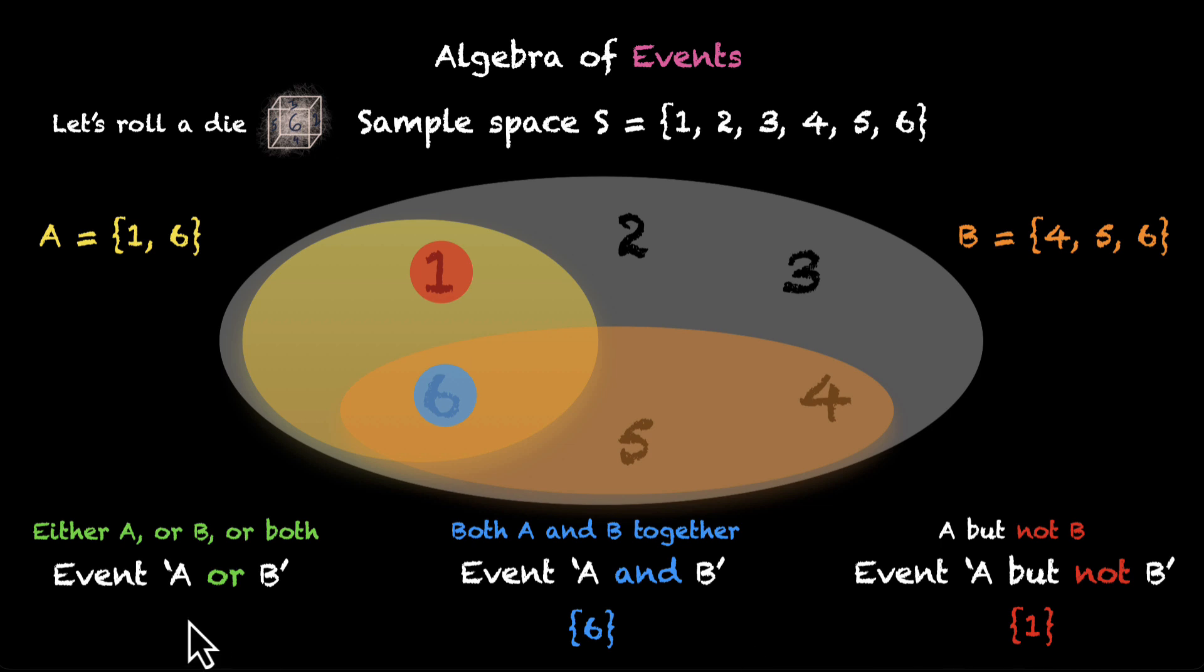And what about the first one, event A or B? This is a bit lenient. This says you can pick anything from A or B. So, we'll pick everything from A or B. Which means 1, 4, 5, and 6. All 4 of them go. Whenever any one of them happens, this event A or B will happen. So, this event is {1, 4, 5, 6}.